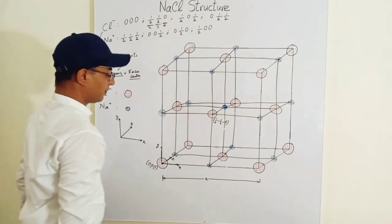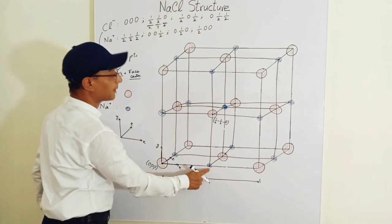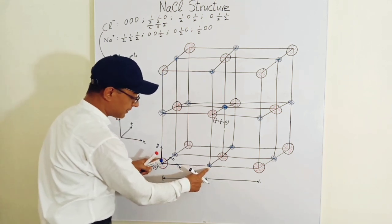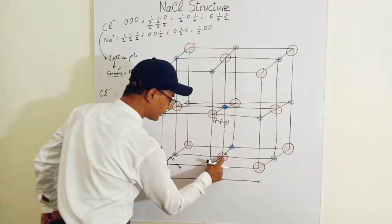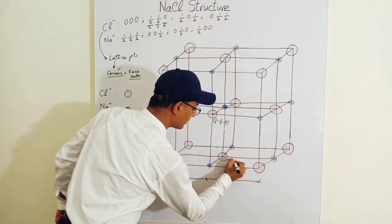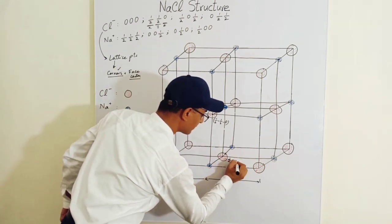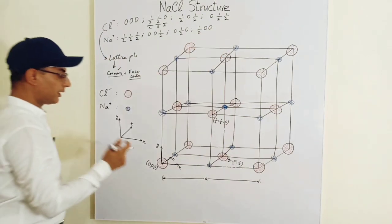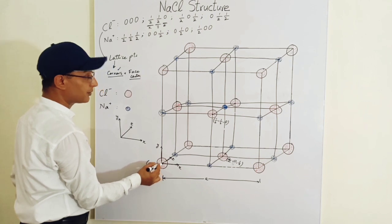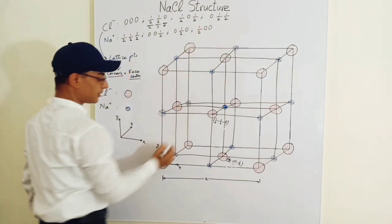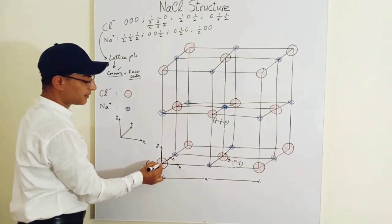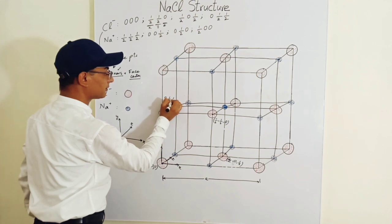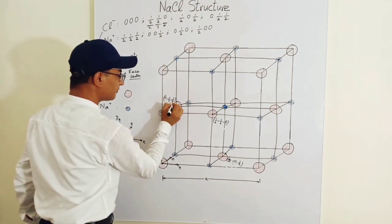For the third chlorine position (½, 0, ½): starting from the origin, travel half along x, stay at zero for y, and travel half along z inward — and that gives us the next chlorine ion position. For the last chlorine position (0, ½, ½): travel zero along x, half along y, and half along z — giving us the final chlorine ion position.